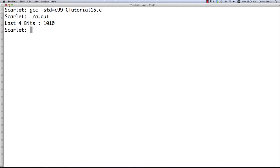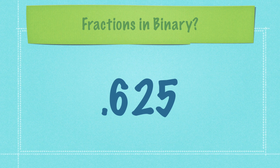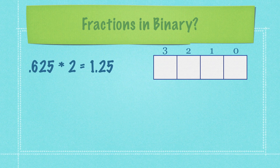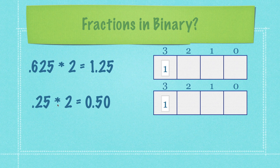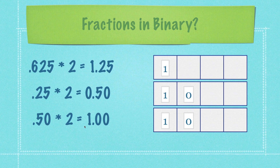For the final topic, I'll cover how to represent fractions in binary. Let's say we want to represent 0.625. What we do is multiply the fraction by two to get 1.25 — take the one and store it. Then take 0.25, multiply by two to get 0.50 — store the zero. Then take 0.50, multiply by two to get 1.0 — store that one. So 0.625 in binary is 101. When things work out evenly like this, it's straightforward.